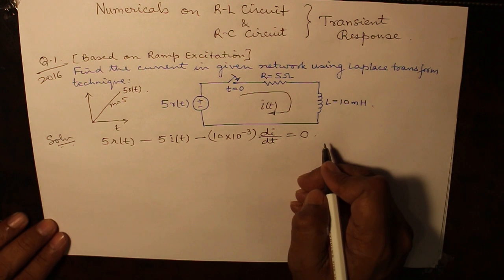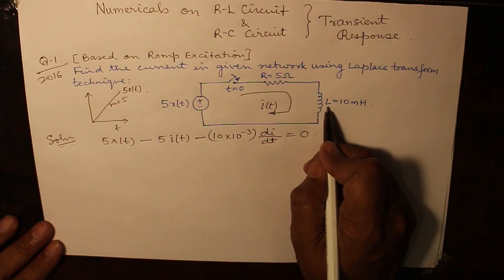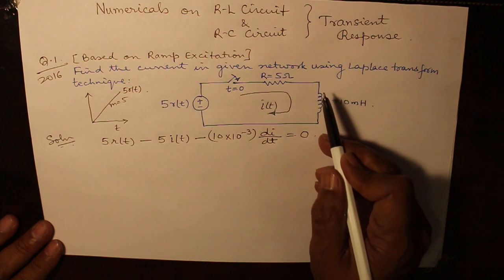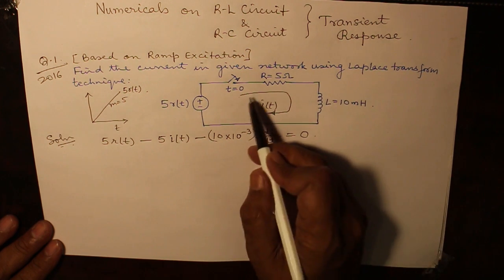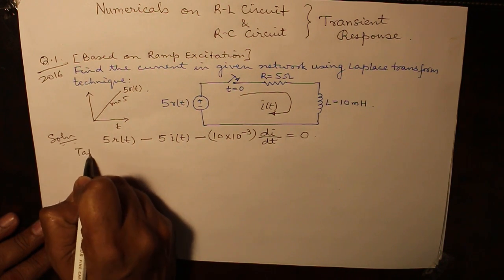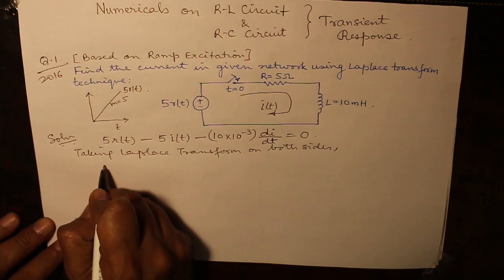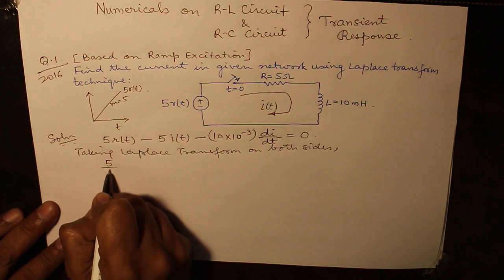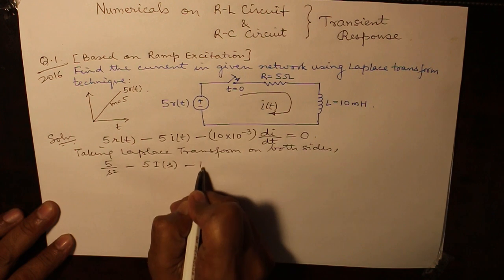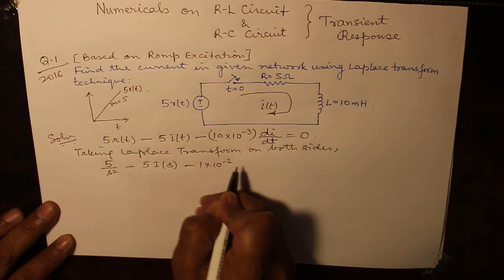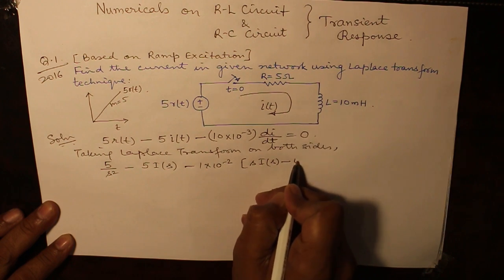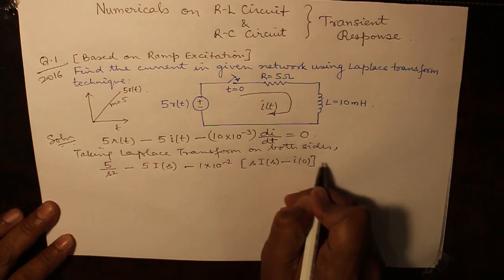For those of you who have not understood, when the inductance is in Henry then LDI by DT is in volt because the current has been assumed to be in ampere. Now taking Laplace transform, we get 5 over S square minus 5 IS minus 1 into 10 raised to the power minus 2 into S IS minus I0 is equal to 0.